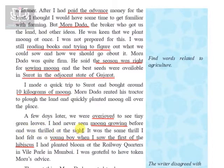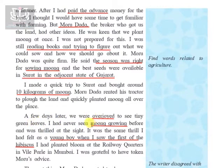Most of us living in metropolitan cities don't know where crops, spices, or fruits actually come from — we think they just come from stores like D-Mart or Big Bazaar. But anyone who has farmed and seen their first crop growing in front of them will be exhilarated and very happy. The writer had never seen moong growing before, and experiencing the growing of a crop for the first time made him very excited.